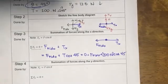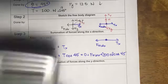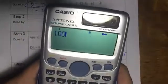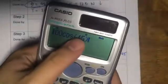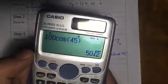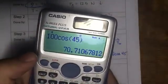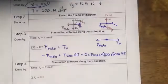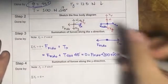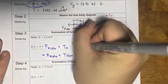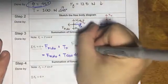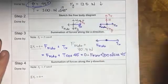And if we were to plug that into our calculator, so 100 cosine of 45, be sure you're in degrees as indicated by letter D over here, is 50 square root of 2, or 70.7 newtons. So F of Fido is 70.7 newtons.